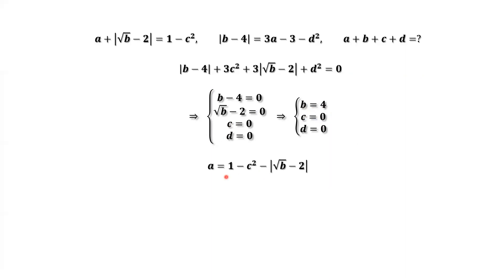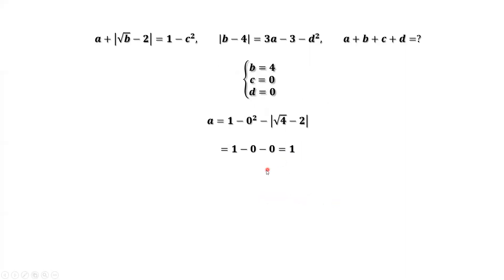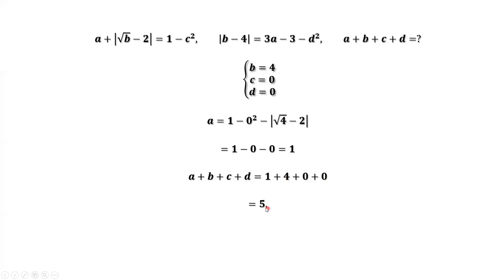Now, what is a? a equals 1 minus c squared minus the absolute value of the square root of b minus 2. With c equal to 0 and b equal to 4, the square root of 4 is 2, and 2 minus 2 is 0. This implies a equals 1. So we have a equals 1, b equals 4, c equals 0, d equals 0. Therefore, a plus b plus c plus d equals 1 plus 4 plus 0 plus 0 equals 5. 5 is the final answer.